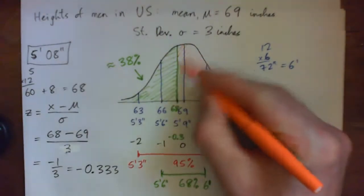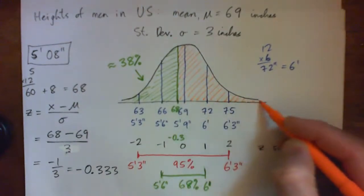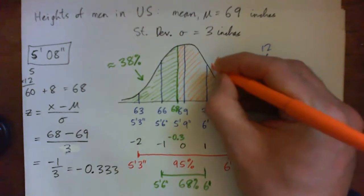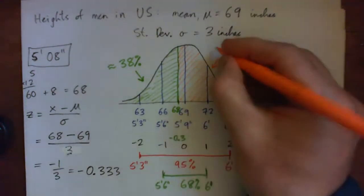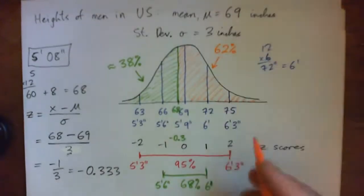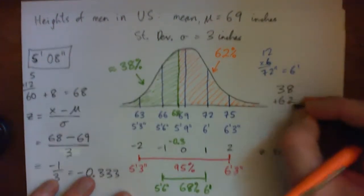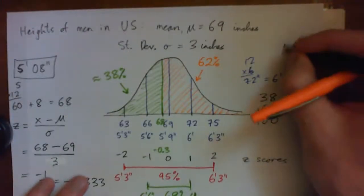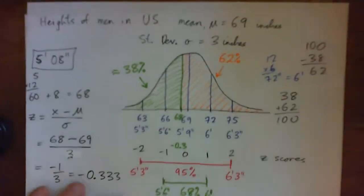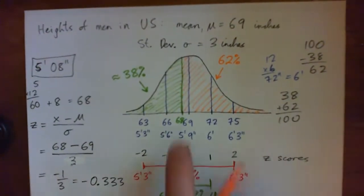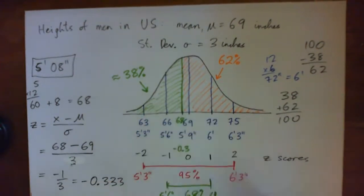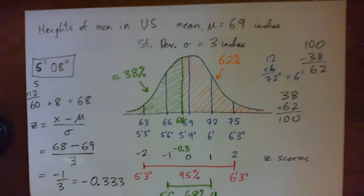So what percent of the population is he shorter than — meaning what percent of men are taller? 62%, because the percentages add to 100. 38 plus 62 equals 100, or 100 minus 38 gives 62. The man is taller than 38% of US men and shorter than 62%. So: what percentage of men are shorter than 5 foot 8? That's 38%. What percentage are taller? That's 62%.